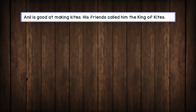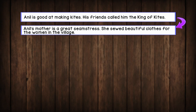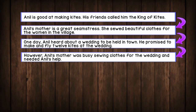Let's check our answers. Anil is good at making kites — his friends called him the king of kites. Anil's mother is a great seamstress who sewed beautiful clothes for the women in the village. One day, Anil heard about a wedding to be held in town. He promised to make and fly twelve kites at the wedding. However, Anil's mother was busy sewing clothes for the wedding and needed Anil's help.